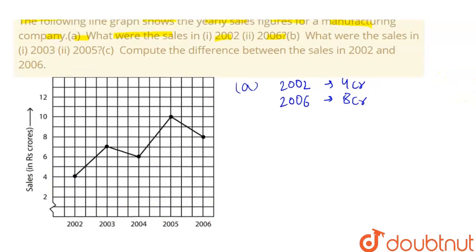Okay, the second part we have is: what are the sales in 2003 and 2005? So the sales in 2003 are, B part, 2003 and 2005. In 2003, sales were 6.8, this is 7 crores, and in 2005 the sale was, in 2005 it was this, that is 10 crores.